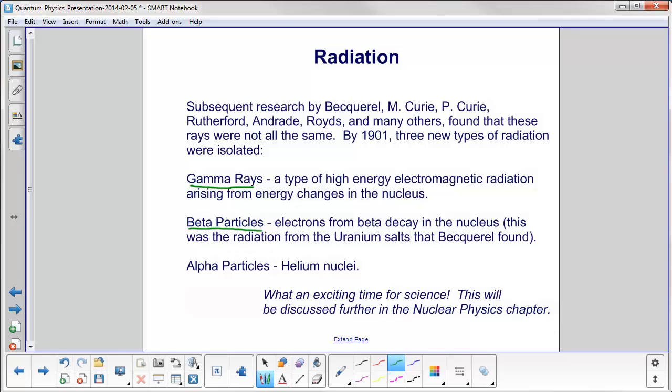Beta particles, these are electrons from beta decay in the nucleus. This was the radiation from the uranium salts that were found by Becquerel. Now, you might be thinking right now, where are the electrons coming from? They're out orbiting the nucleus, but we'll cover that later. And also alpha particles, which are basically helium nuclei.